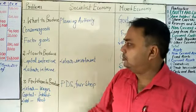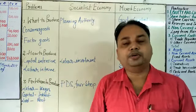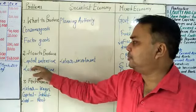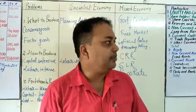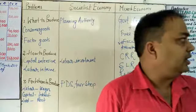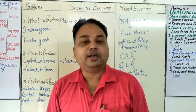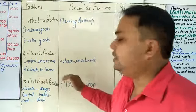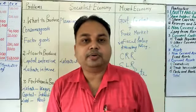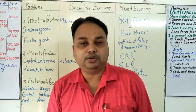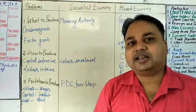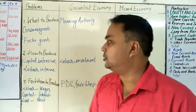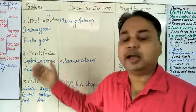The second problem is how to produce, which means what technology or technique is going to be used. There are two types of techniques: capital intensive and labor intensive. Capital intensive means more capital, more machinery and fixed assets are going to be used. For example, in construction industries, you can observe that more labor is used compared to capital.